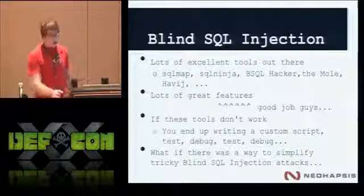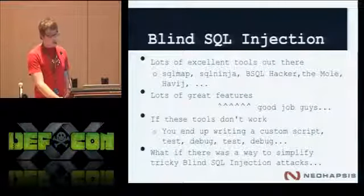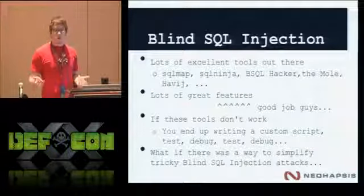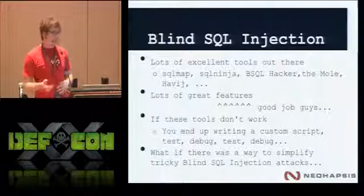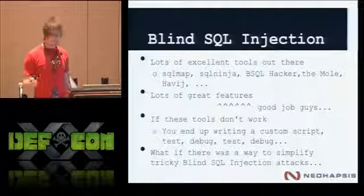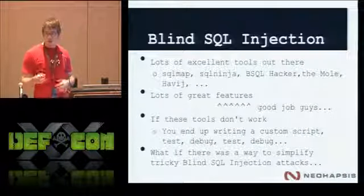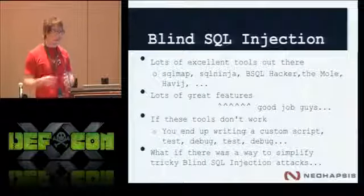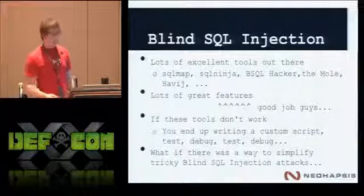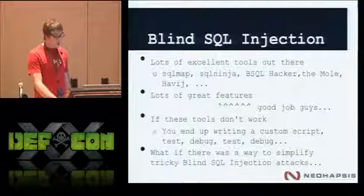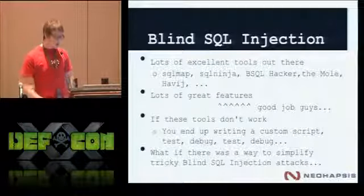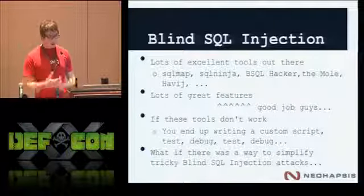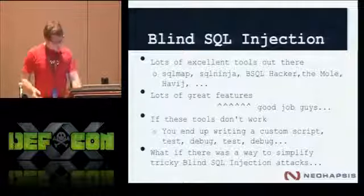There are awesome tools out there — SQL map, SQL ninja, the mole. They all have great features, but when these tools don't work, what do you end up doing? You end up writing your own query. Maybe there's some weird nuance where requests have to be double URL encoded, or you can't use ASCII, or a database command just doesn't work, maybe the DBA has a specific policy. So you fire up a Ruby or Python script and write out your own logic — it's kind of a pain in the ass. It takes a lot of time. We were thinking: what if there was a way to take that process out, the part where you have to write customized scripts for when things don't work?